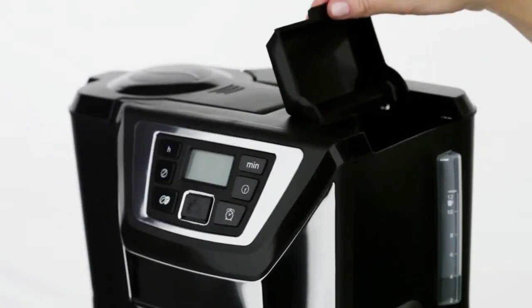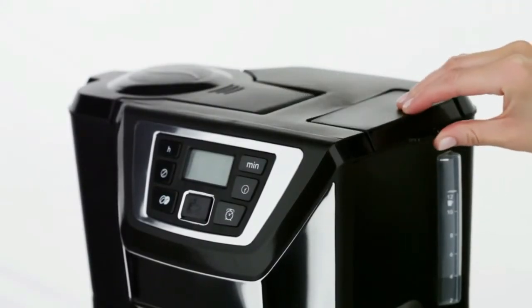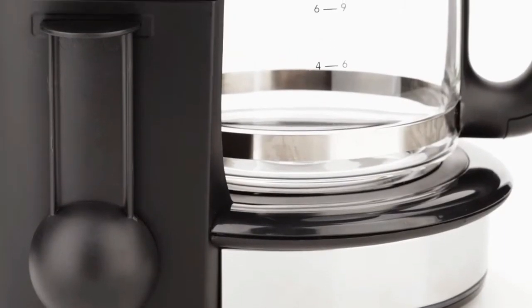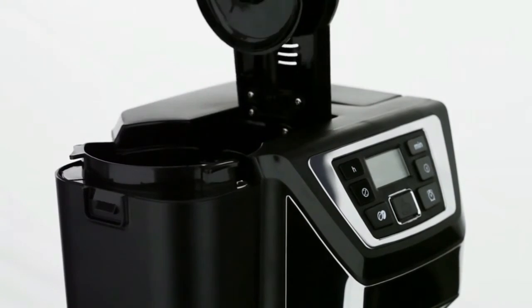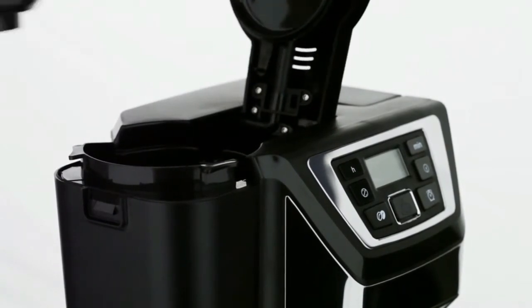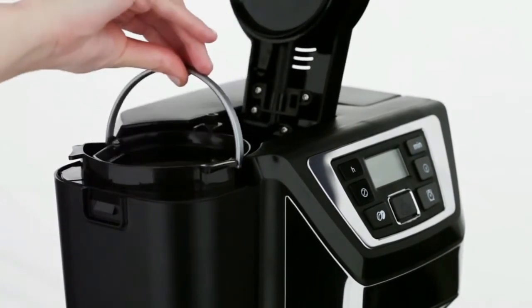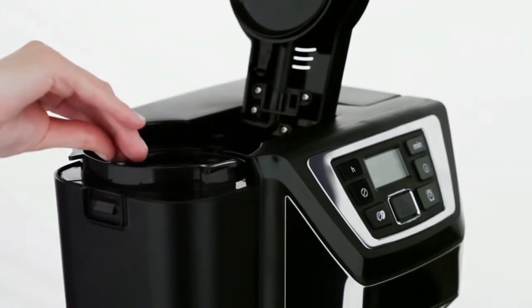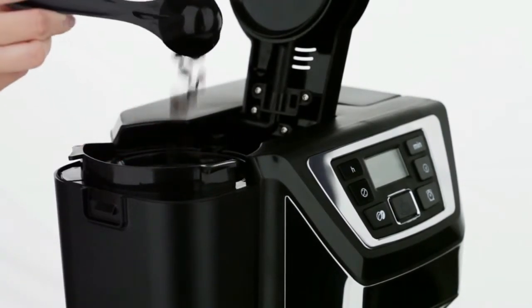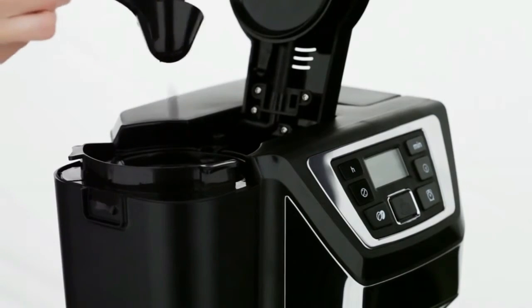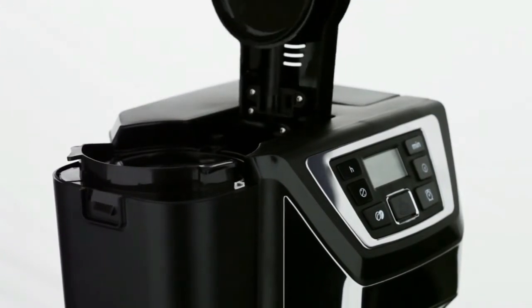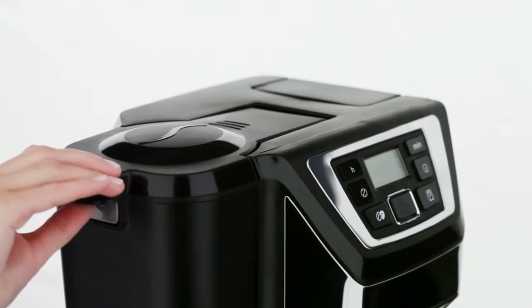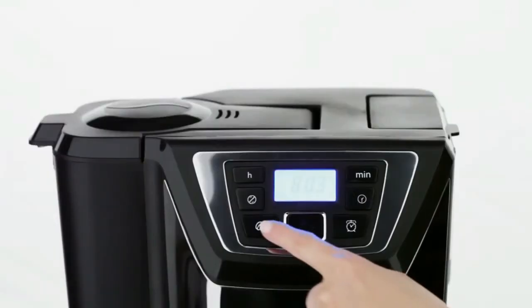The Russell Hobbs 22000 does an excellent job of balancing these factors thanks to its efficient grind and brew mechanism. This mechanism involves using whole beans to make your coffee, ensuring you always get the freshest and most flavorful cup possible in a short time. The grinder has multiple settings, so you can choose your grind's coarseness to suit your preference.